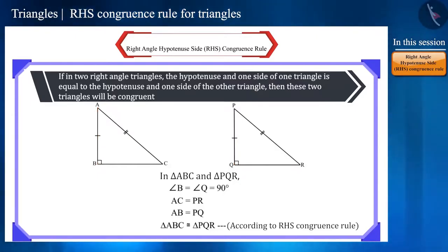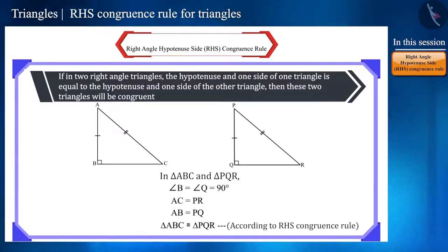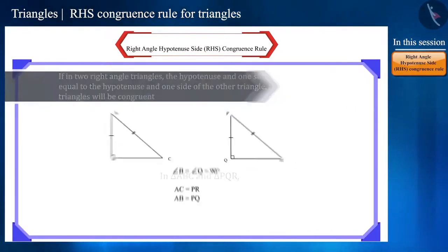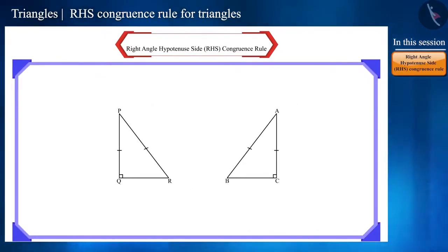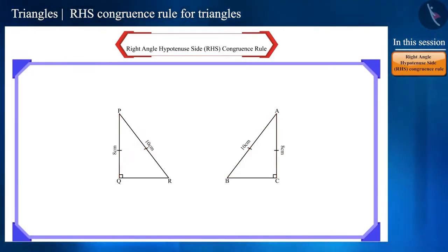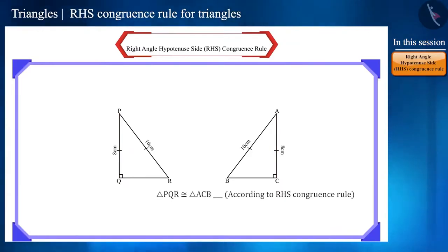For the purpose of practice, we can draw some pairs of right angle triangles. For example, draw two right angle triangles where the hypotenuse is 10 cm and one side is 8 cm. So will the two triangles be congruent? Yes.